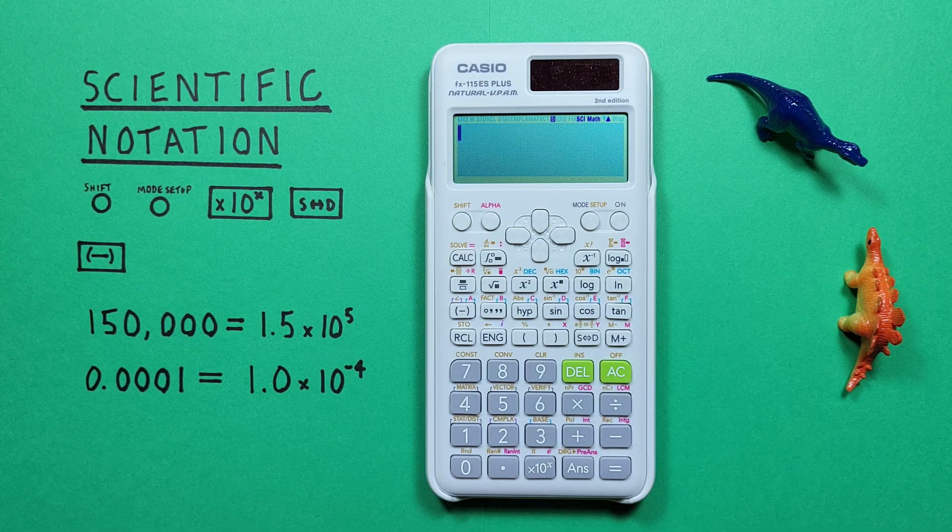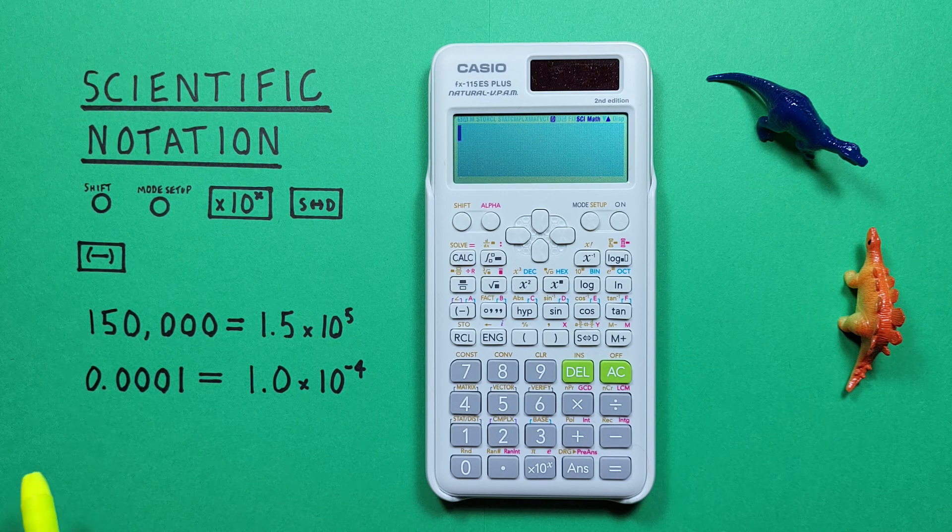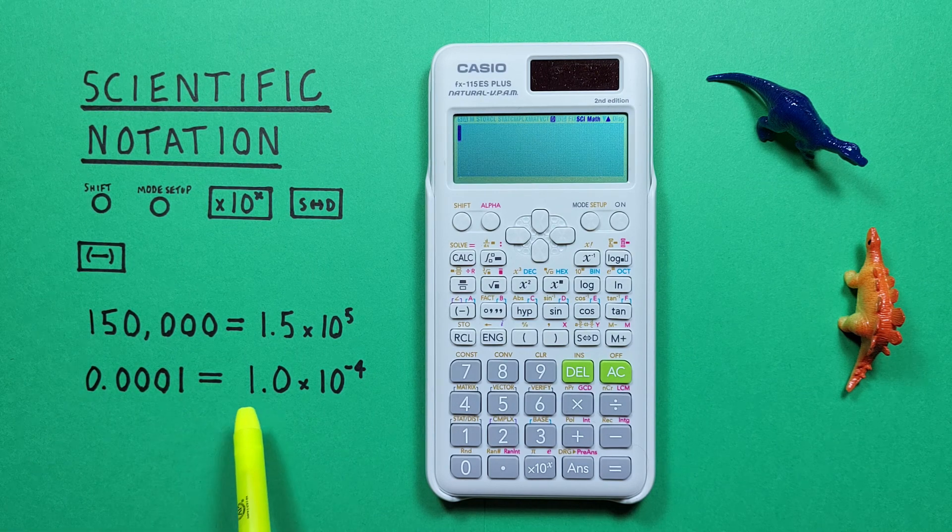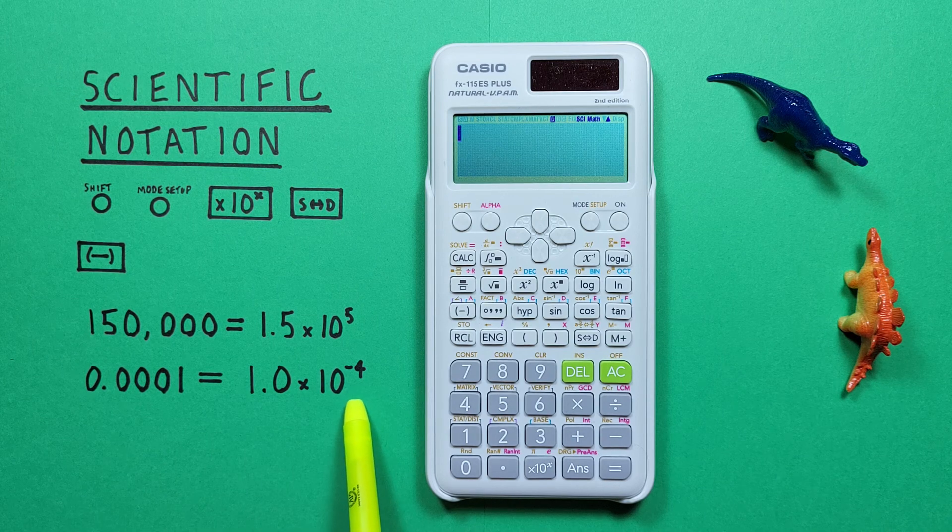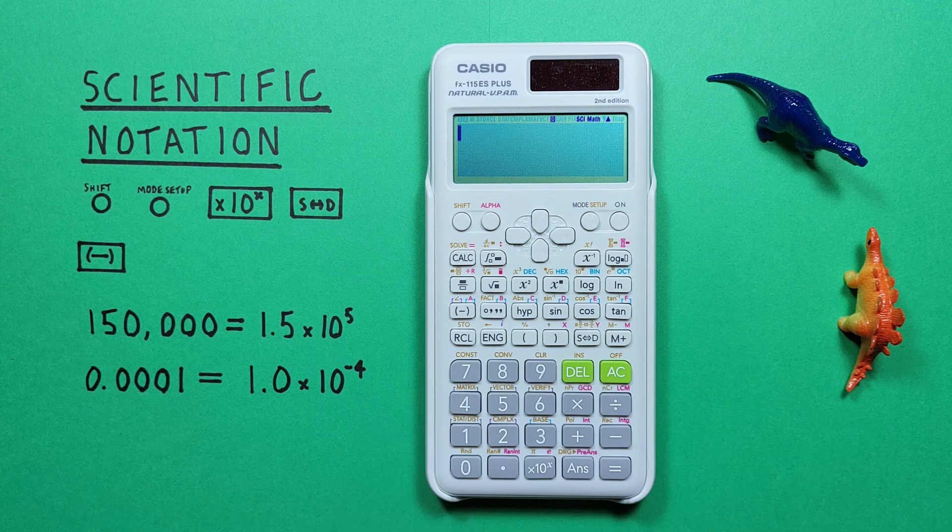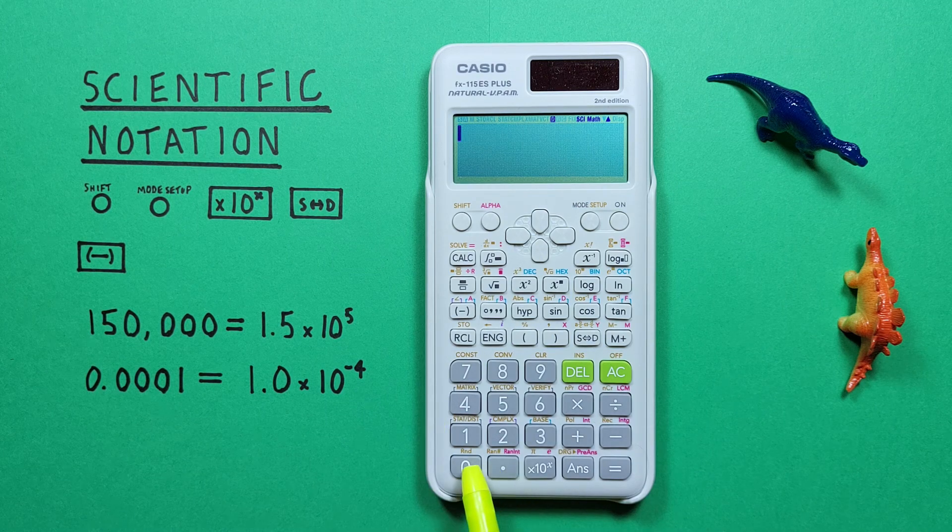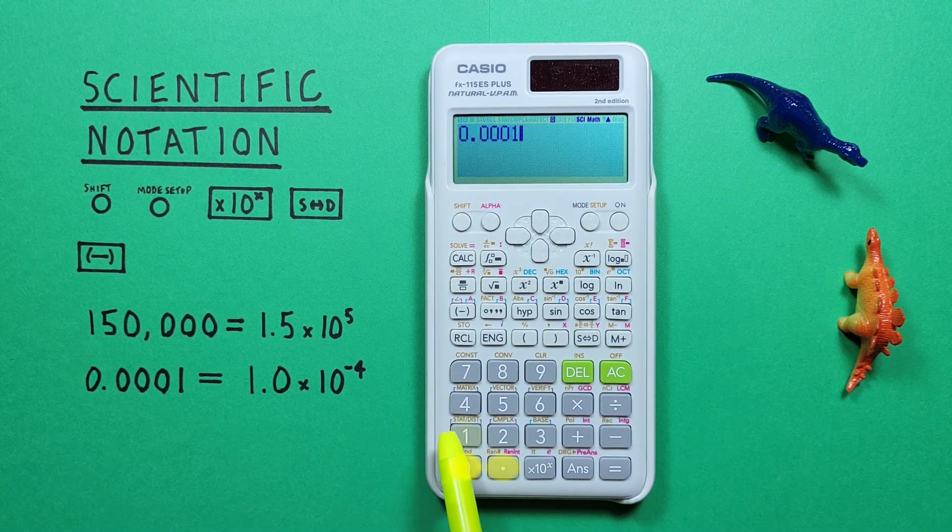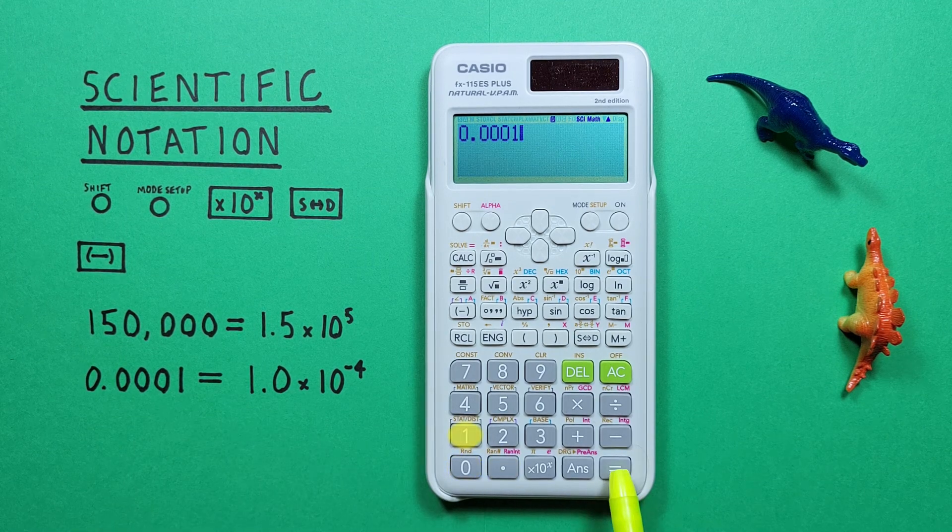This works for really small numbers as well. For example, if we had 0.001 and wanted that written in scientific notation. While we're in scientific notation mode, all we have to do is press 0.001, that's our number, and equals.